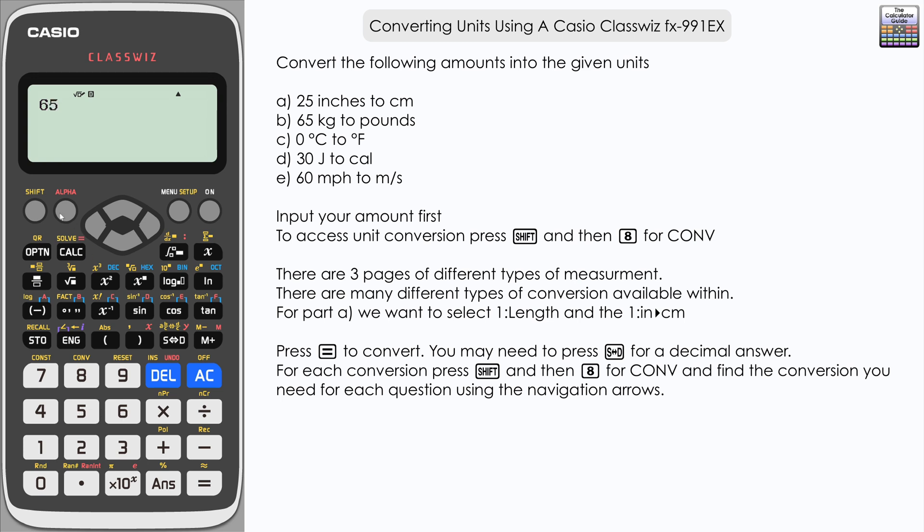So again for the second one, 65 for the kilogram, shift and 8 to convert. Kilograms is a unit of mass so it's 4. You can see we've got ounces to grams and vice versa, we've got pounds and kilograms. So we've got kilograms so we need to choose option 4 here, kilograms to pounds. Press equals, here we go, 143.3 pounds.